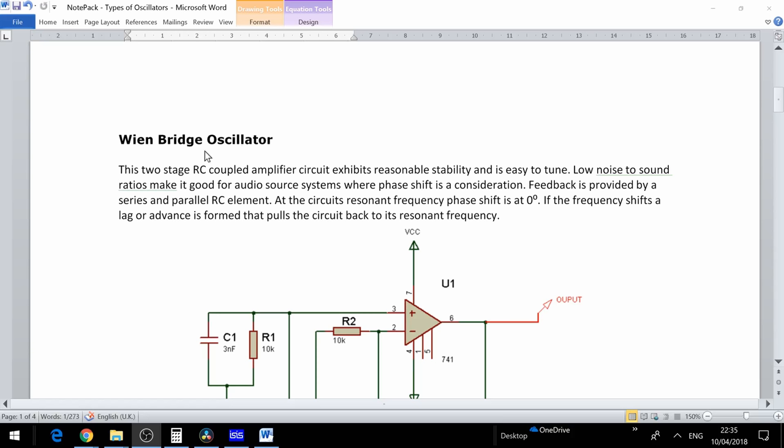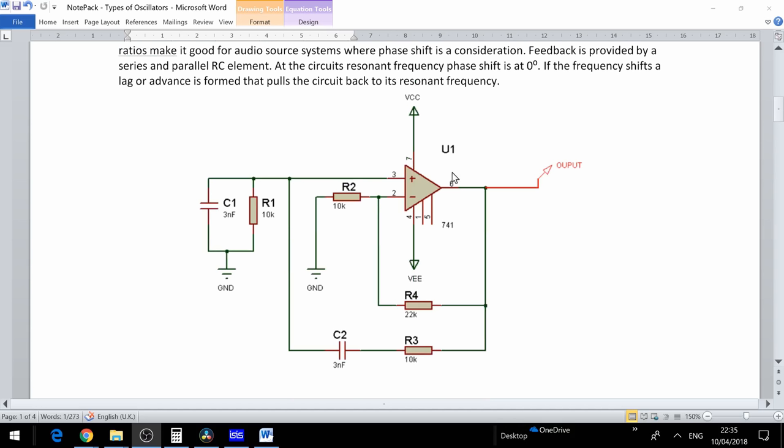Now we'll look at the Wien bridge oscillator in a simple notation form. This is a two stage RC coupled amplifier that exhibits reasonable stability and is relatively easy to tune. Its low noise to signal ratio makes it ideal for audio systems where phase shift is a consideration. Feedback is provided by a series and parallel RC element. Here we have the three main elements. In this example a 741 op-amp. We have feedback provided by this RC element and this parallel resistance element here. And over here this part provides us an input.